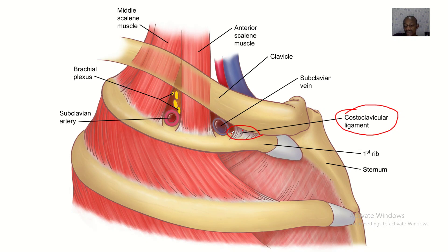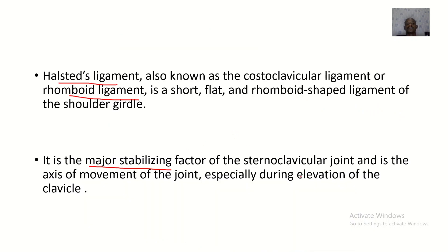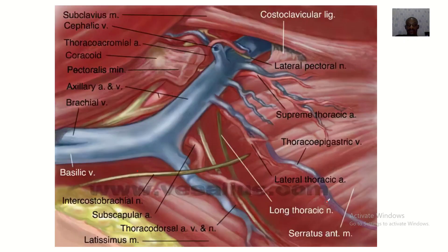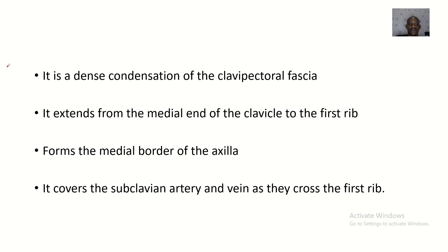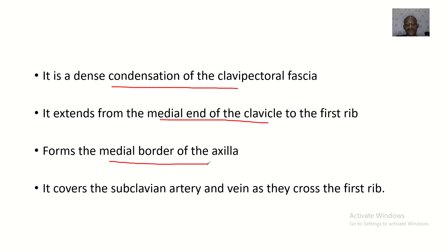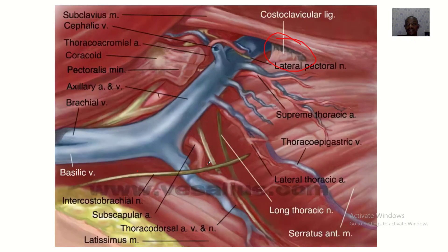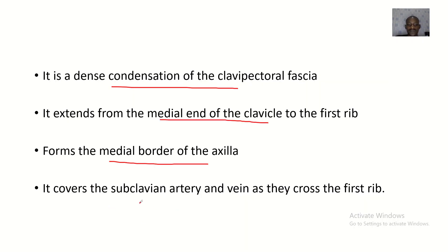The costoclavicular ligament runs from the clavicle to the first rib. It is a dense condensation of the clavipectoral fascia, extending from the medial end of the clavicle to the first rib. It forms the medial border of the axilla and covers the subclavian artery and vein as they cross the first rib.